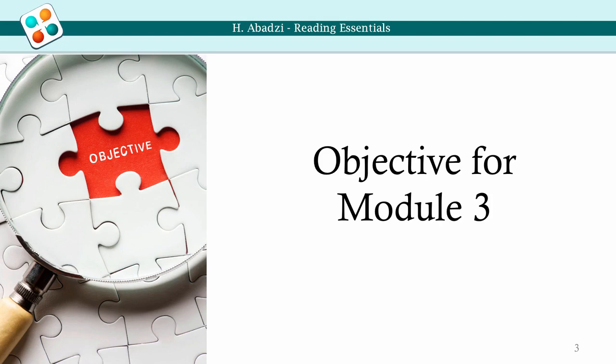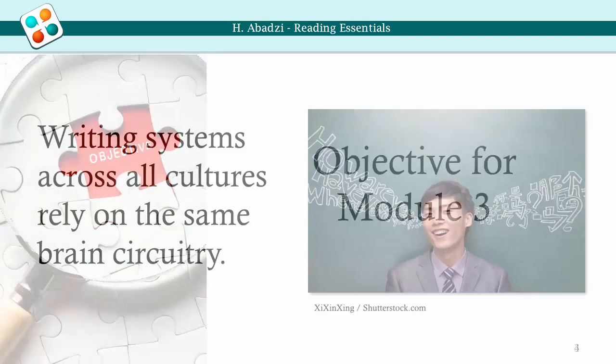By the end of this module, you will be able to explain how the brain identifies letters, which visual variables influence early grade reading, and how to make instruction more efficient.